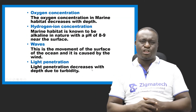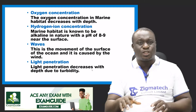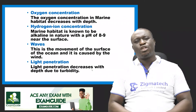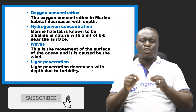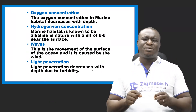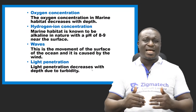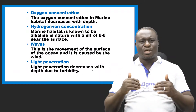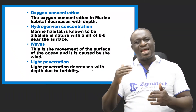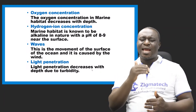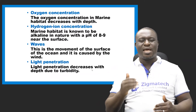Oxygen concentration in marine habitat decreases with depth — as you go deeper into the ocean, oxygen concentration reduces. Hydrogen ion concentration is another characteristic: marine habitat is alkaline in nature. Using the pH scale, the pH range for the ocean is between 8 and 9.